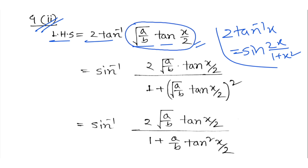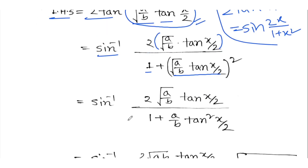So x will be the whole thing, and sin⁻¹(2x/(1+x²)) — here x will represent the whole expression. Then 1 plus x will be the whole thing. So with this substitution, x equals root of a/b, and we can look at that value.